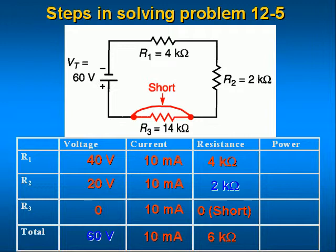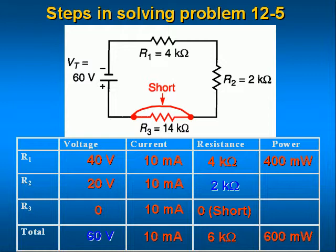The total power provided to the circuit equals 60 volts times 0.01 amps equals 0.6 watts or 600 milliwatts. The power dissipated by R1 is P1 equals 40 volts times 0.01 amps equals 0.4 watts or 400 milliwatts. The power dissipated by R2 is P2 equals 20 volts times 0.01 amps equals 0.2 watts or 200 milliwatts. The power dissipated by R3 is P3 equals 0 volts times 0.01 amps equals 0 watts.